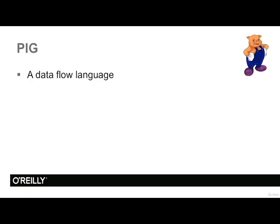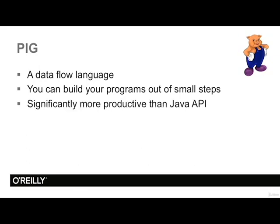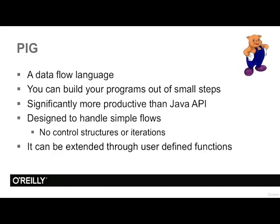PIG is addressing this issue. PIG is a data flow language, and its advantage is that we can build our programs out of small steps. You can write a line, try it out, write the next line, see how it works — giving you a fairly iterative and incremental way of building Hadoop programs. Productivity is similar to Hive, so much more productive than Java APIs. But PIG is designed to handle relatively simple flows, so there are no control structures or iterations, and we can extend it using user-defined functions.